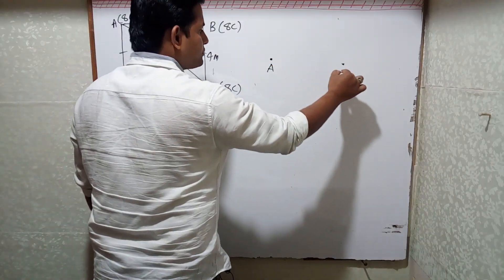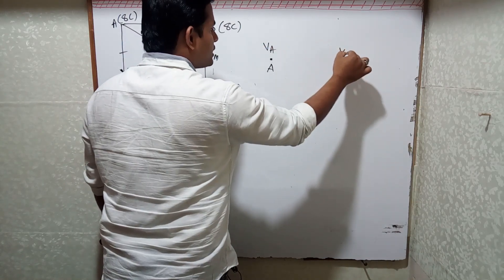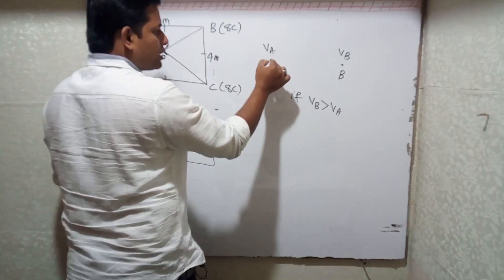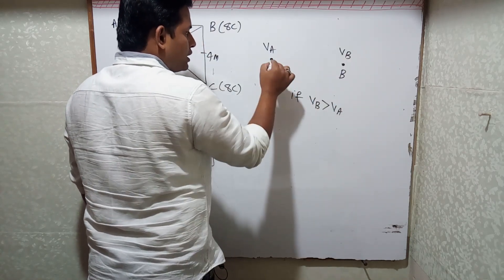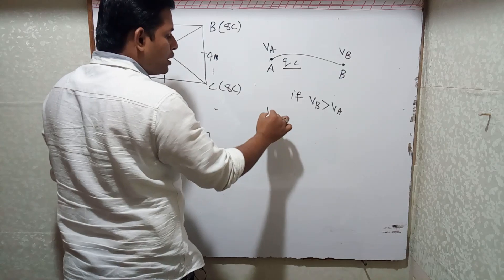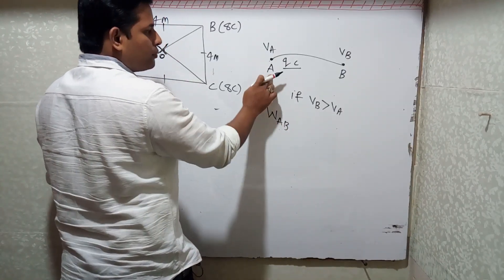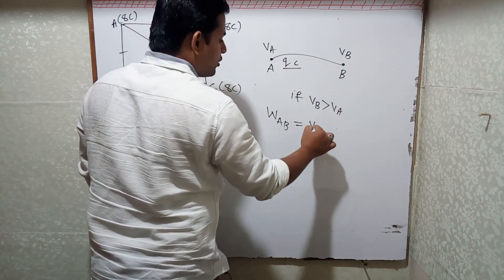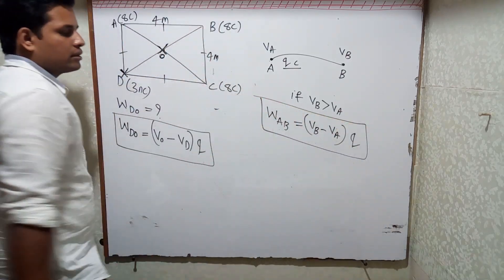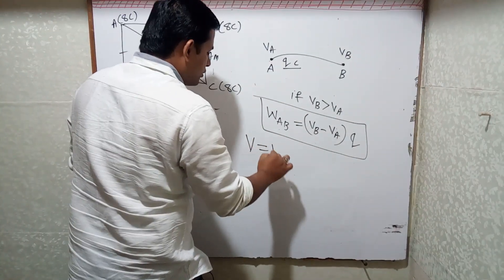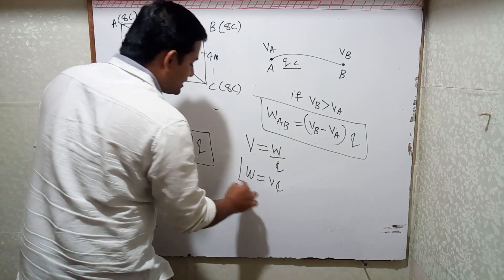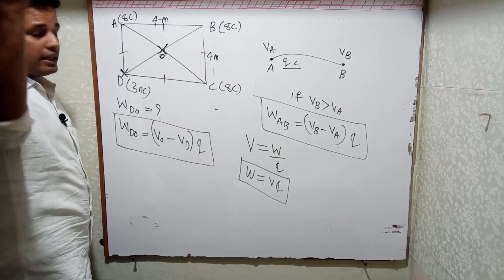Let me explain where this formula comes from. If I have point A with potential V_A and point B with potential V_B, and V_B is greater than V_A, then to take a charge of q coulombs from A to B, the work done from A to B equals (V_B − V_A) × q. This comes from the basic formula V = W/q, so W = Vq.